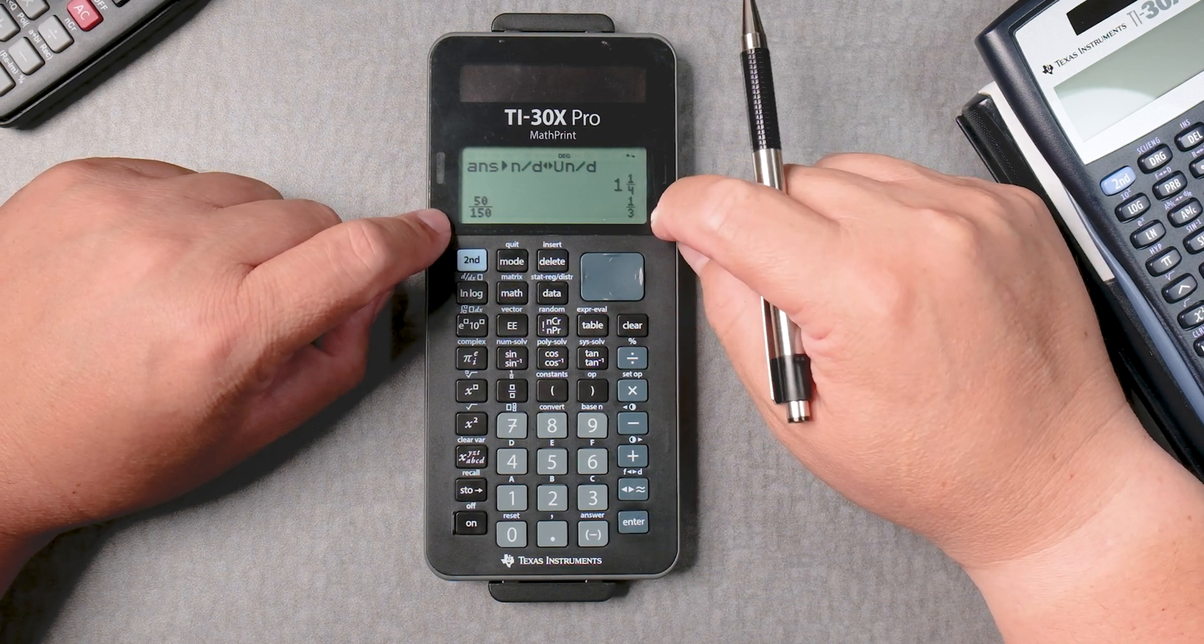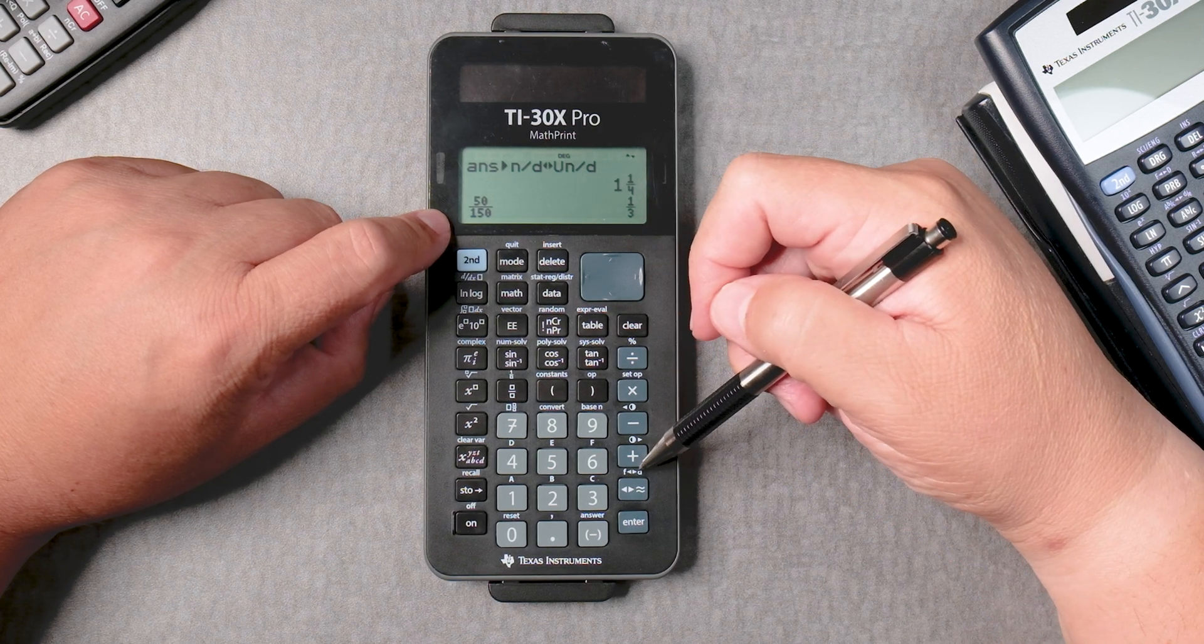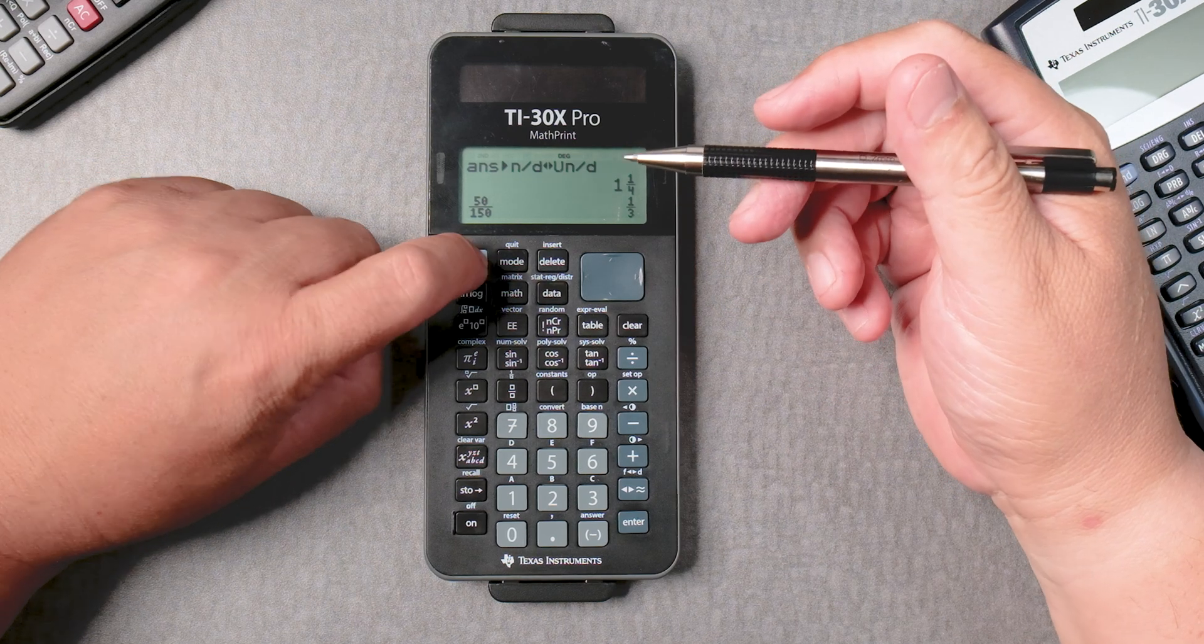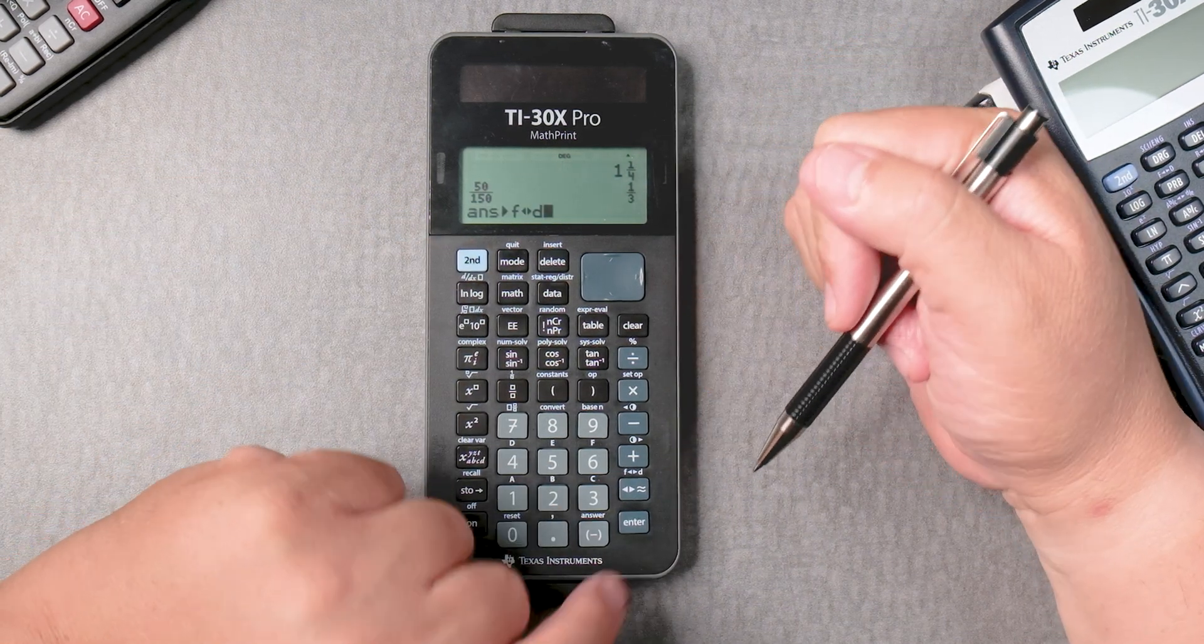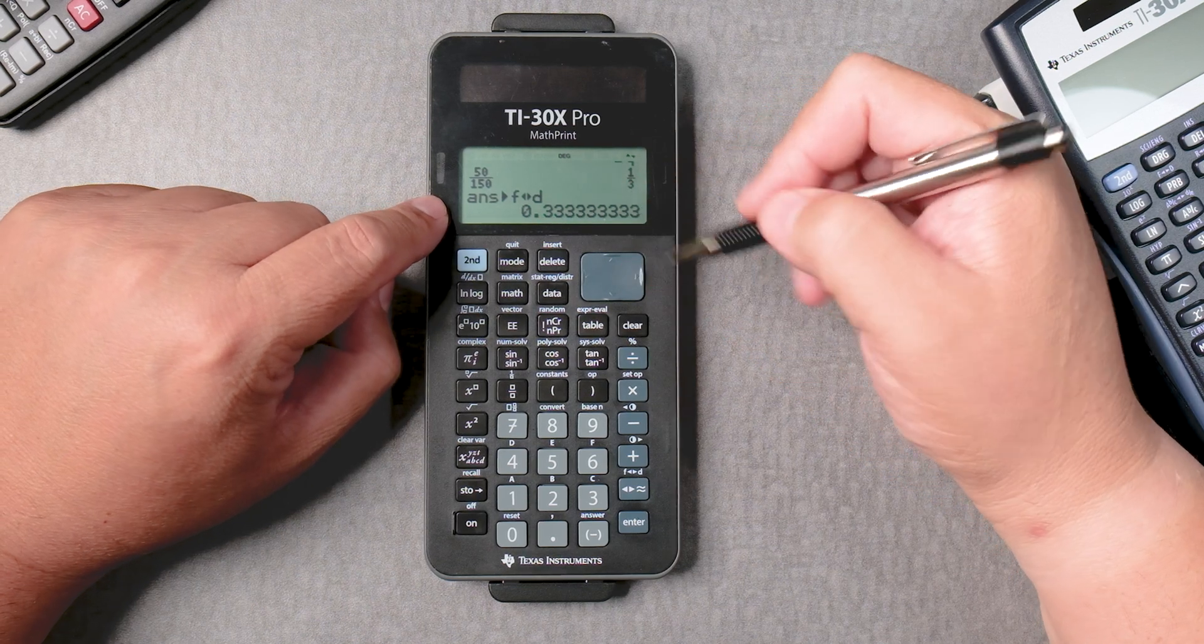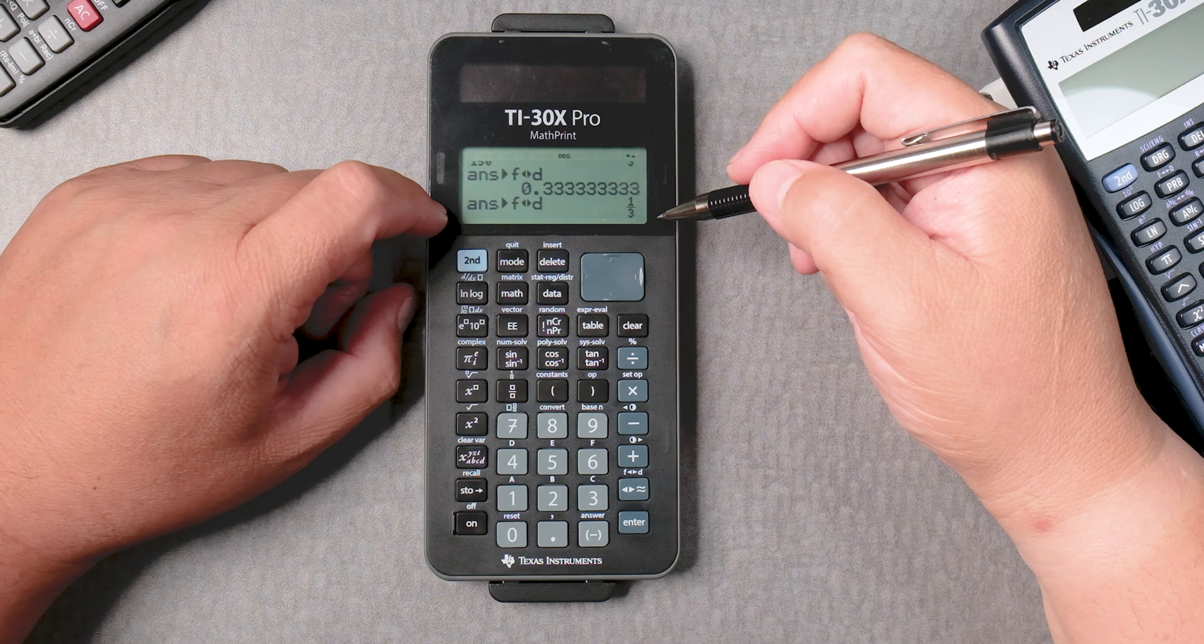Let's say I want this one-third to be a decimal answer. Here you have fraction to decimal. So second, press the almost equal sign, enter, and it gives you 0.33 decimal. And you can press those buttons again, and it gives you the fraction.